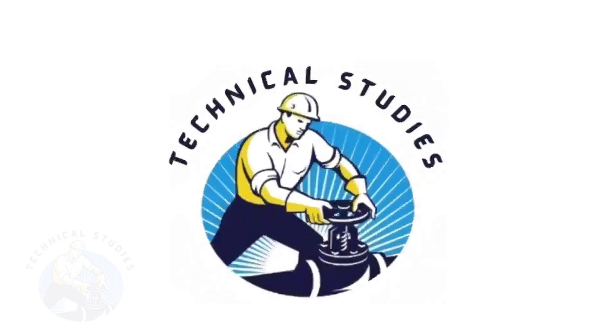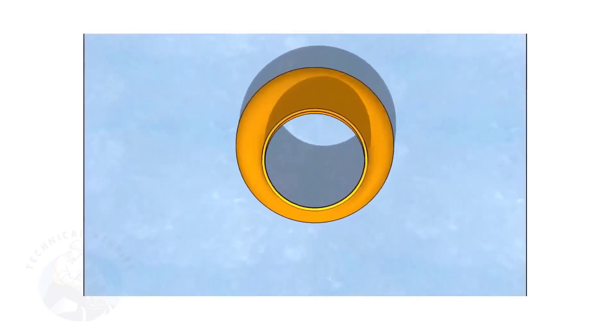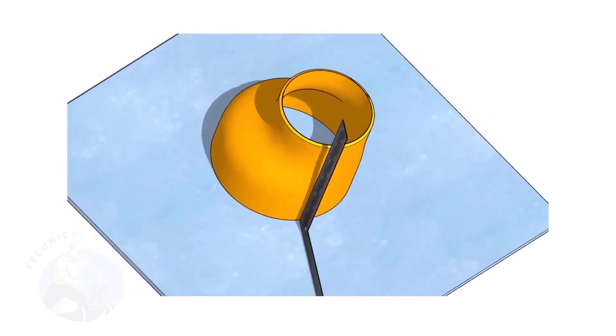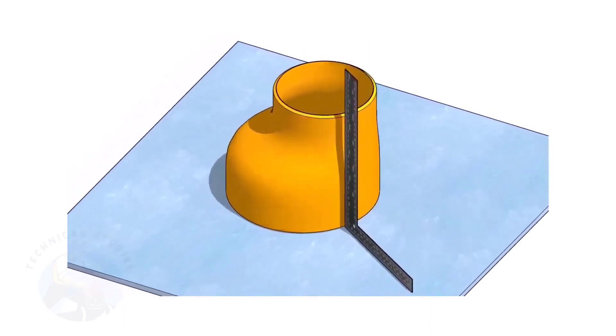Welcome to Technical Studies. Fitting an eccentric reducer to a pipe that is already fitted to another fitting, like a flange, tee, elbow, etc., is a little tricky.